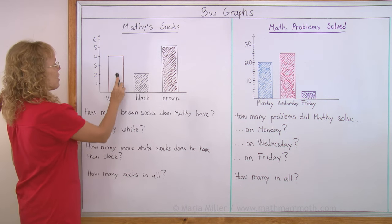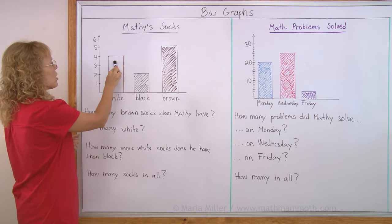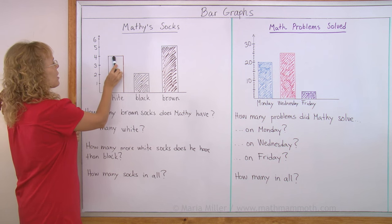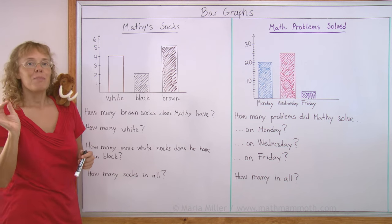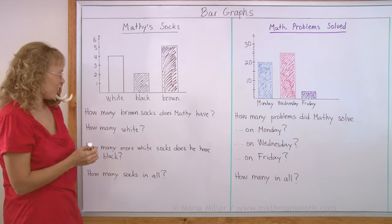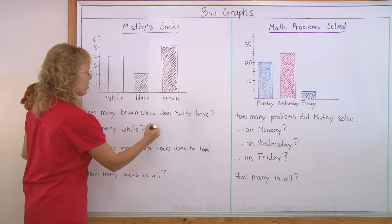White socks - there's a rectangle and how high does it reach? We go all the way up to the rectangle here to the top and check what number is here. Four. So Matthew has four white socks. How many white socks? Four.